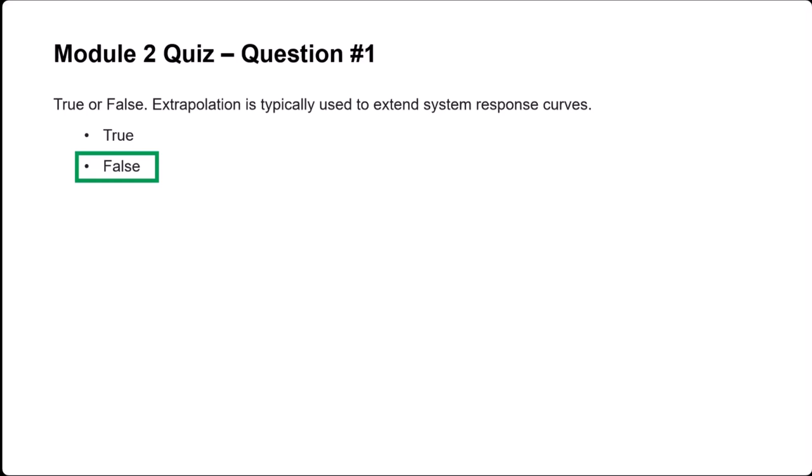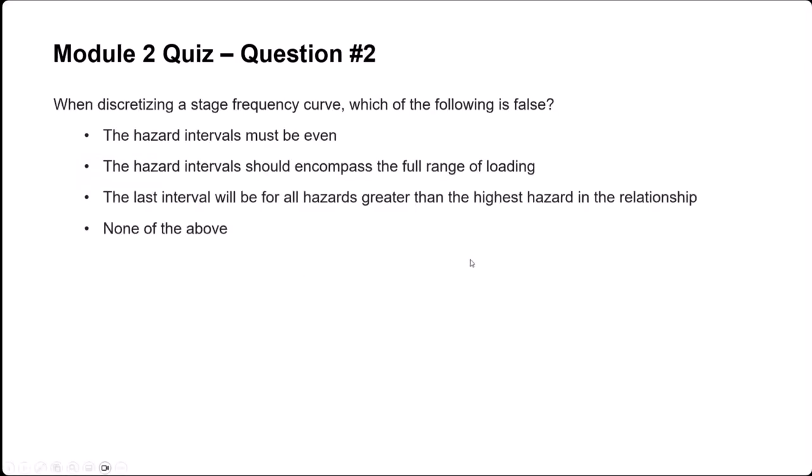Question two: when discretizing a stage frequency curve, which of the following is false? From this list, it's going to be that first one — that hazard intervals must be even. Typically that's how we do it, but it is not a requirement. There are also certain times when, because of inflection points in your stage frequency curve, system response, or consequence functions, you might want more resolution around those stages and can make intervals smaller.